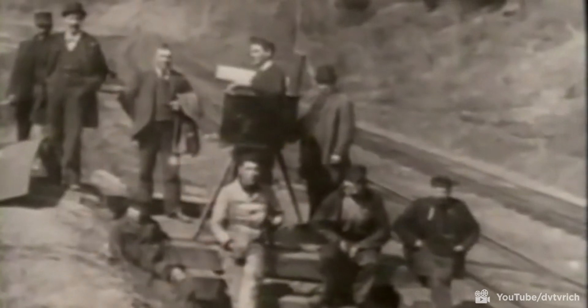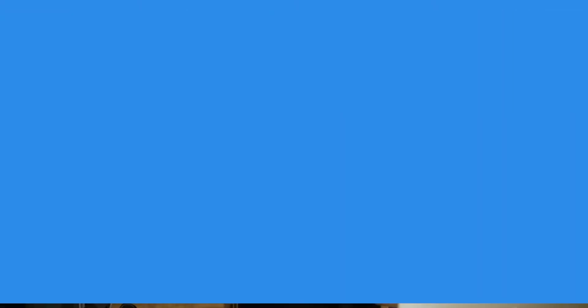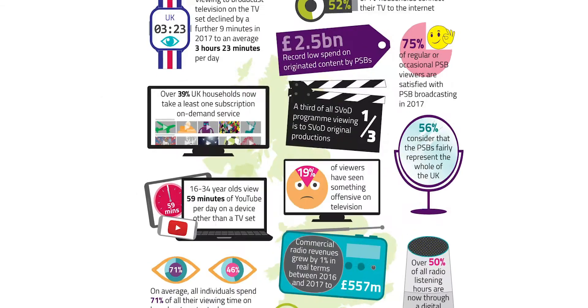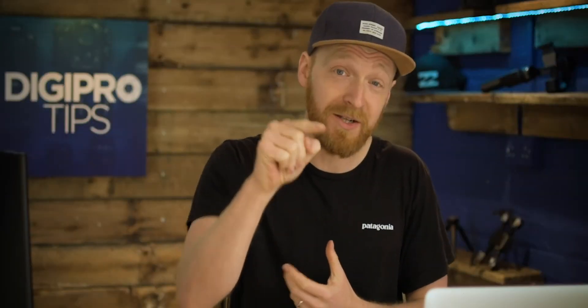Frame rates and shutter speed have been a dominant factor in film and TV production for well over a century, since the advent of the medium. However, now that we've moved into this new digital age and more people watch online content than film and TV combined — talking about you, Gen Z — then we have a question on our hands: does frame rate and or shutter speed really matter for digital content?